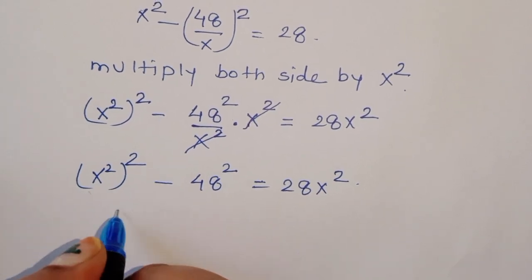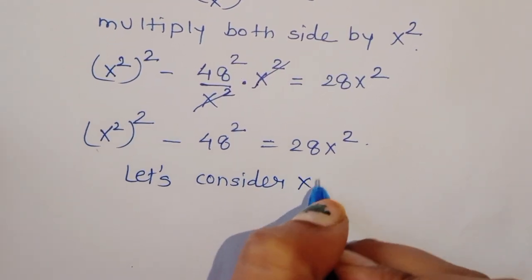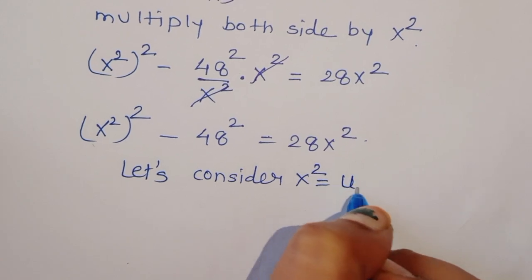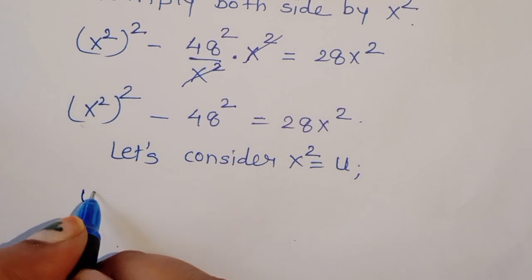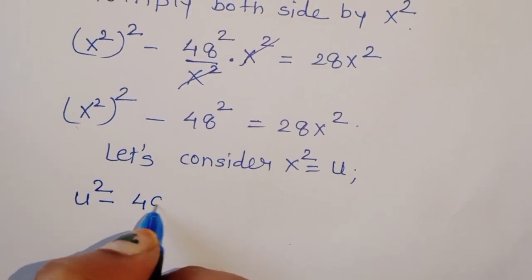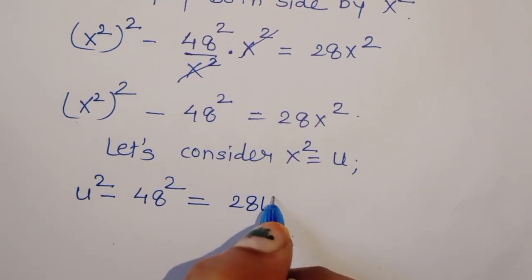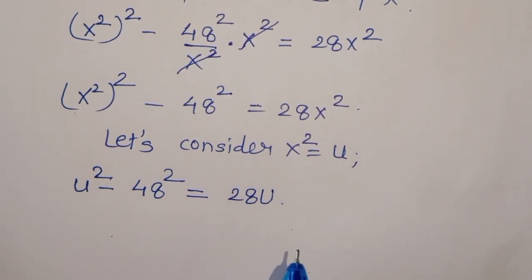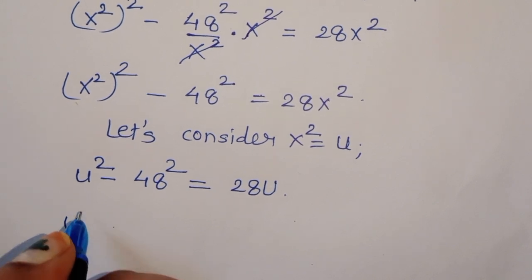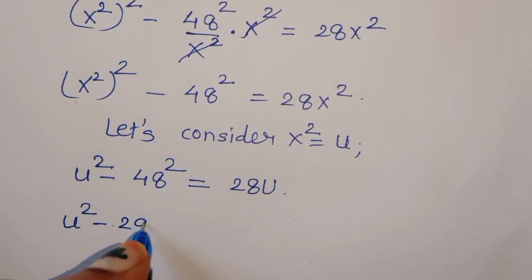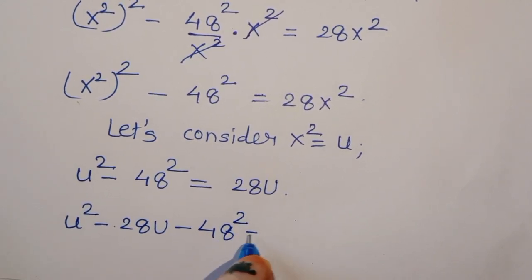Now let's consider x² = u. Substituting, we get u² - 48² = 28u. Rearranging the terms gives us u² - 28u - 48² = 0.